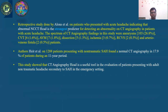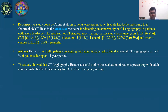A retrospective study by Allons et al. on patients who presented with acute headache indicated that an abnormal CT head is the strongest predictor for detecting an abnormality on CT angiography in patients with acute headache. The spectrum of CT angiography findings in that study included aneurysms, RCVS in 3 patients, cerebral venous thrombosis in 6 patients, AVM in 7 patients, dissection in 5 patients, ischemia in 3 patients, reversible cerebral vasoconstriction syndrome in 2 patients, and AV fistula in 2 patients. Heat et al. on 108 patients presenting with non-traumatic SAH found a normal CT angiography in 17.9% of patients during an 11-year period. Thus, this study showed that CT angiography head is a useful tool in the evaluation of adult non-traumatic headache secondary to SAH in the emergency setting.